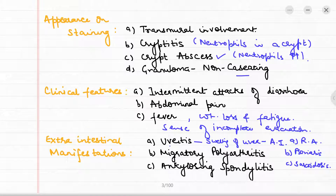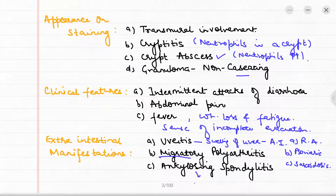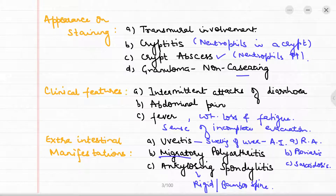In migratory polyarthritis, the pain spreads from one joint to another, which is why it is called migratory. A third extra-intestinal manifestation is ankylosing spondylitis, where arthritis affects the spine, causing fusing of the vertebrae, resulting in a rigid or bamboo spine.